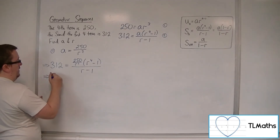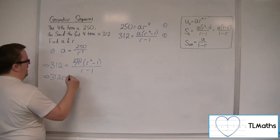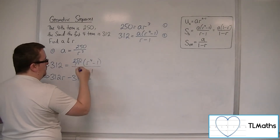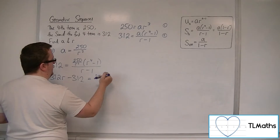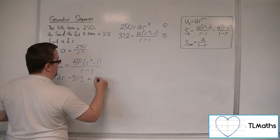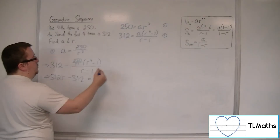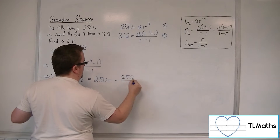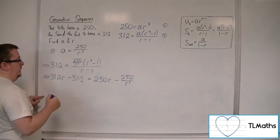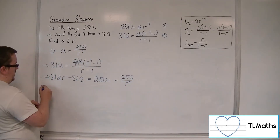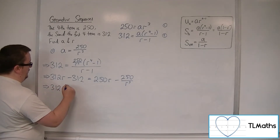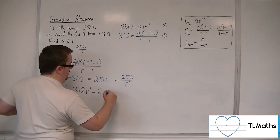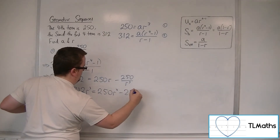Let's multiply both sides by (R minus 1). So 312R minus 312 equals, multiplying through the bracket, 250 over R cubed times R to the 4, which is just 250R, take away 250 over R cubed. Now multiplying everything by R cubed gives 312R to the 4 minus 312R cubed equals 250R to the 4 minus 250.